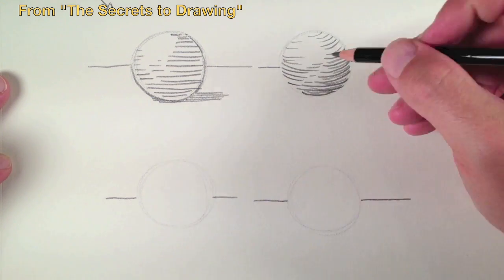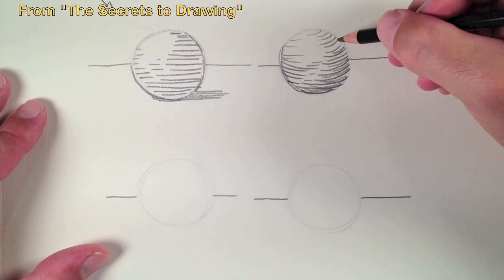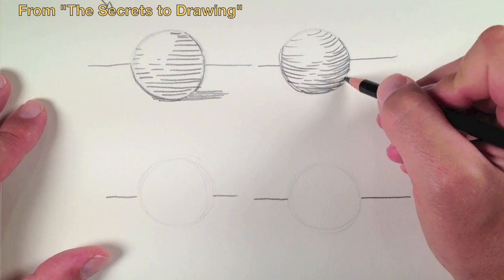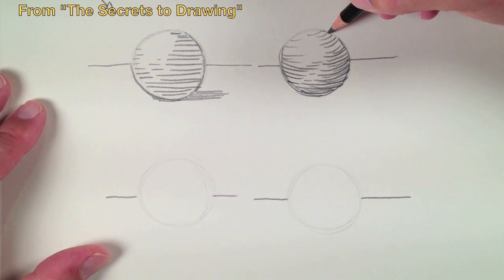You can see here in the second sphere that I've created more of the illusion of form as well as the illusion of shadow by making these cross contour lines follow the form of the sphere.